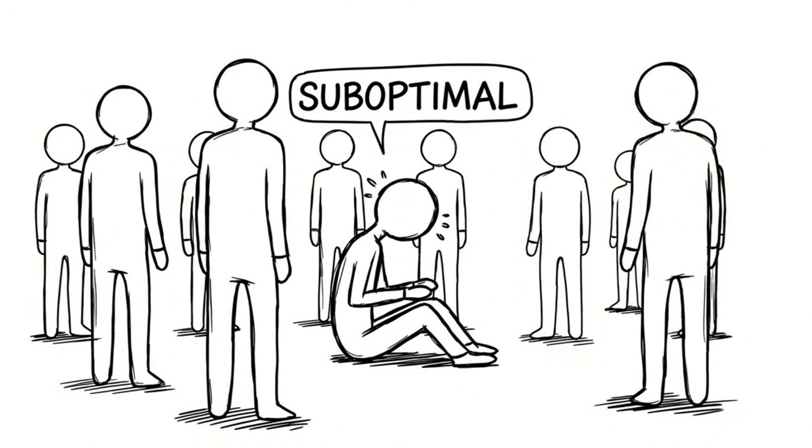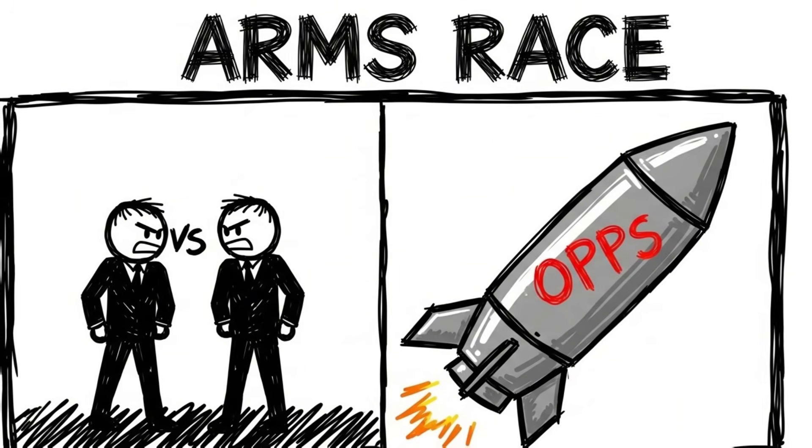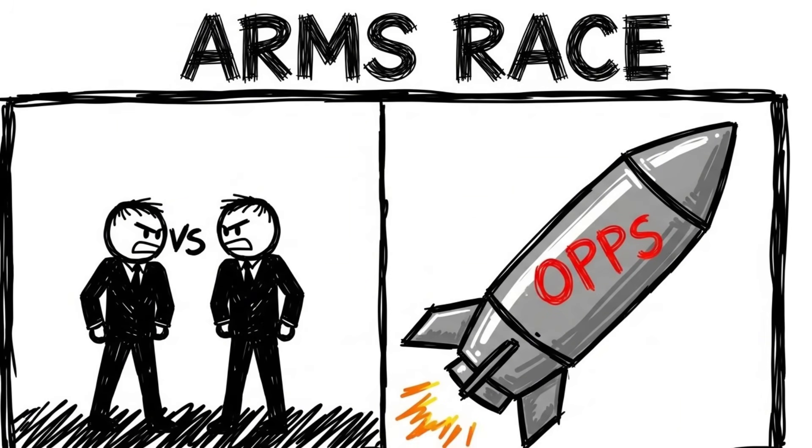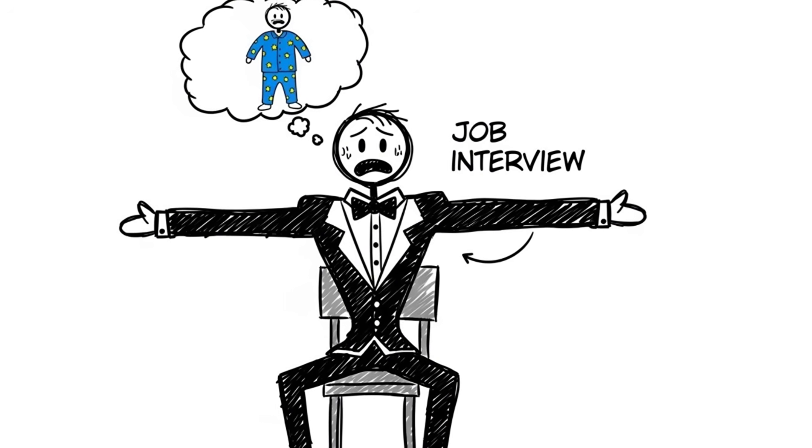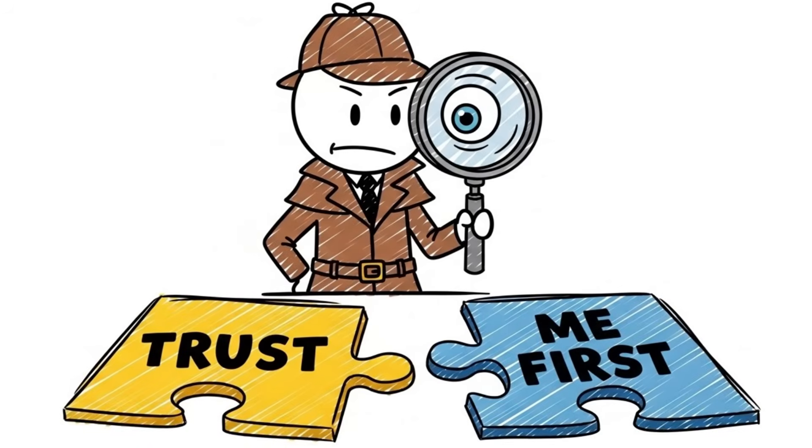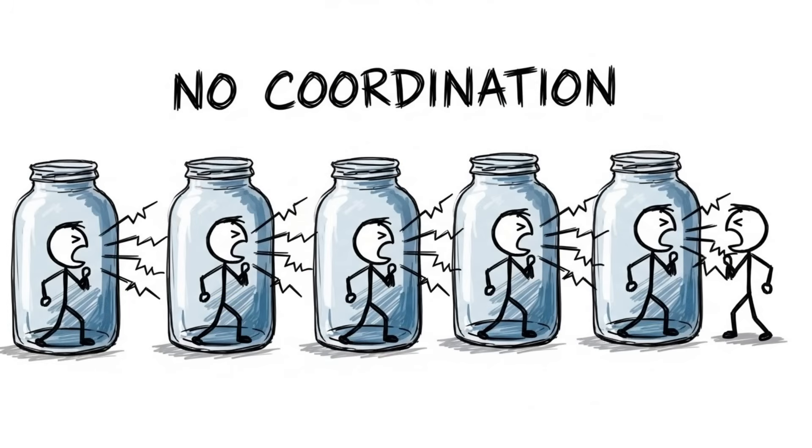The optimal group outcome, everyone sitting, is unstable because the individual incentive to stand is too high. This law governs everything from nuclear arms races to why you feel compelled to wear a suit to a job interview, even though everyone would be more comfortable in pajamas. We are locked in suboptimal traps because we cannot trust others to coordinate with us.